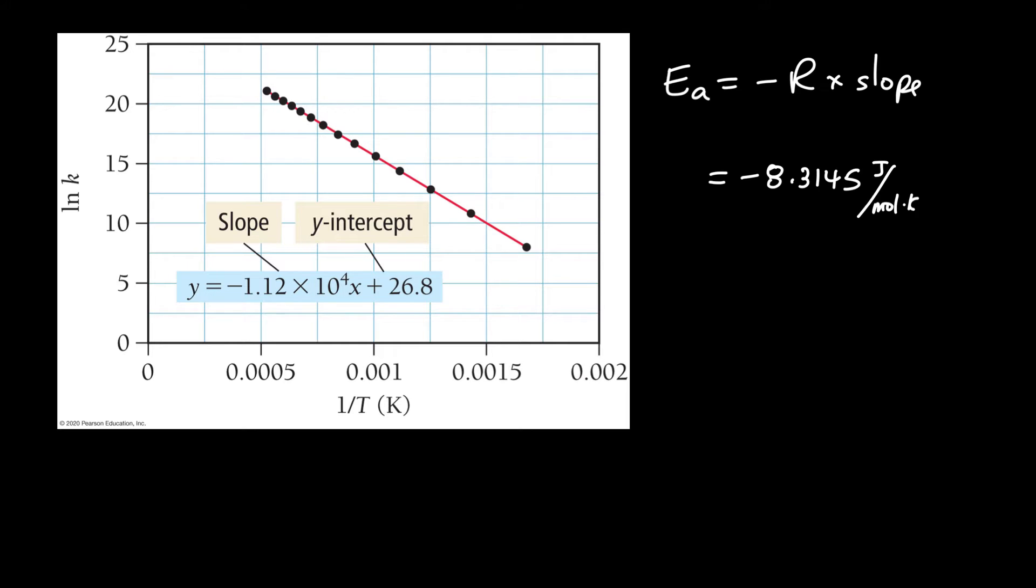And we need to get the slope. So the slope is given on here as, let me see, so minus 1.12 times 10 to the 4. And interestingly enough, it doesn't have units. So we need to go ahead and figure out the units of slope.